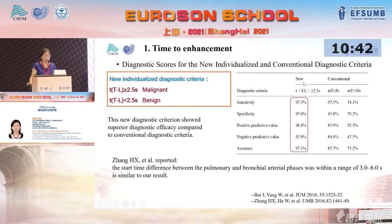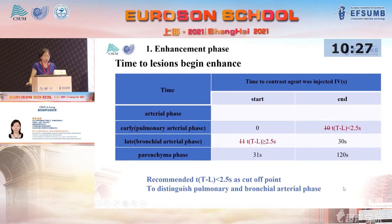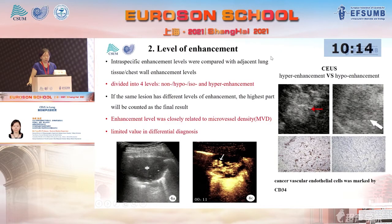Comparing the new criteria with the conventional criteria of 8 or 10 seconds, we find better sensitivity, specificity, and accuracy with our approach. Another Chinese group reported similar results. So we now recommend using a time difference longer than 2.5 seconds as the cut-off point to distinguish pulmonary arterial phase from bronchial arterial phase. The second diagnostic point is enhancement level.